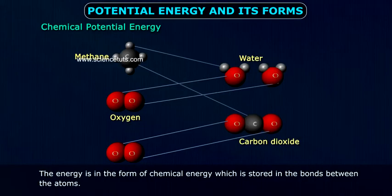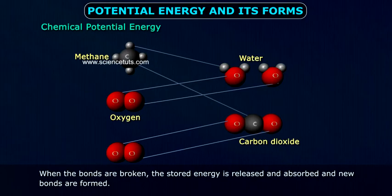Chemical potential energy. The energy is in the form of chemical energy, which is stored in the bonds between the atoms. When the bonds are broken, the stored energy is released and absorbed and new bonds are formed.